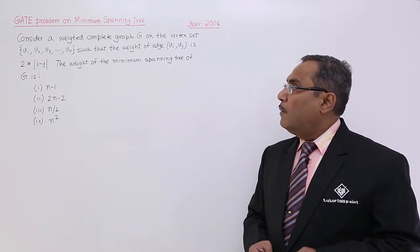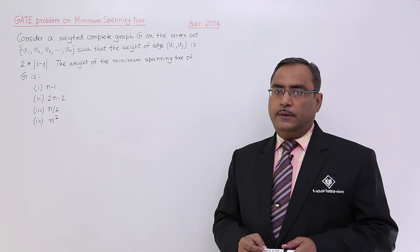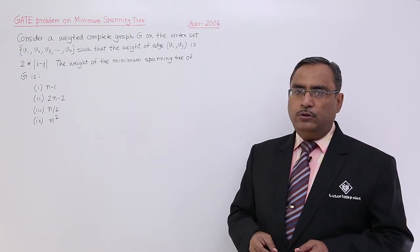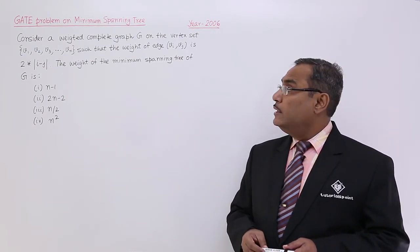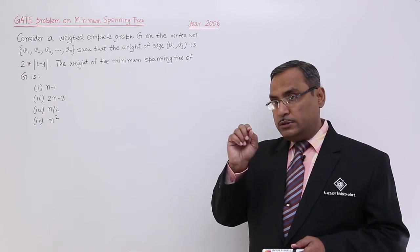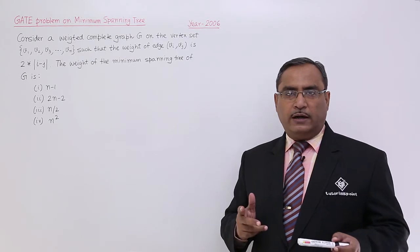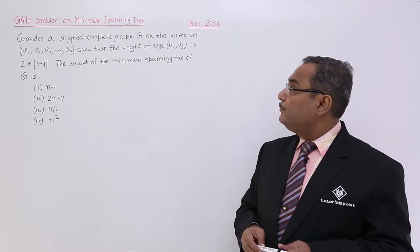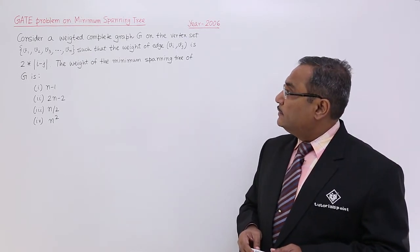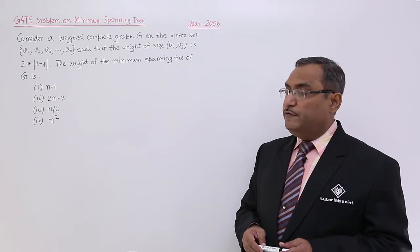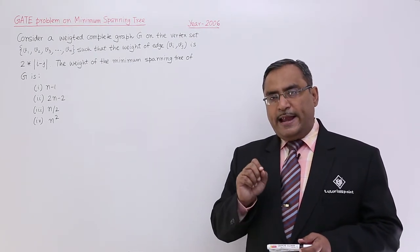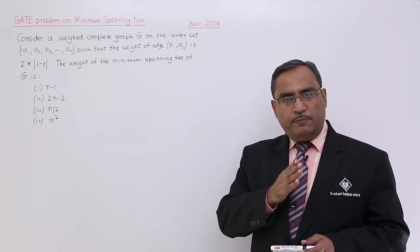Consider a weighted complete graph G. Weighted should be there because I am going to get the minimum spanning tree. Please concentrate on the word complete graph - that means in between any pair of vertices we are having one edge. The vertex set is V1, V2, V3, ...Vn. So we are having n number of vertices starting from V1 to Vn.